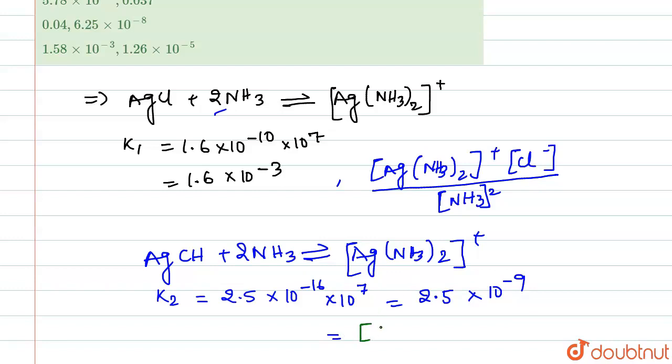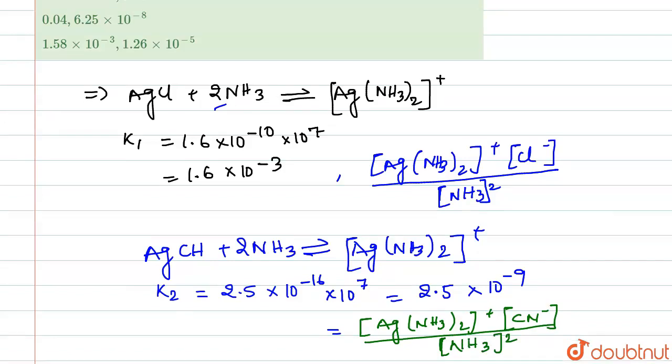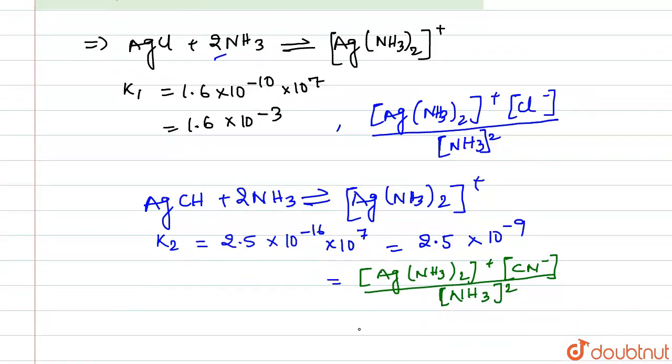For this, the concentration we are writing is, this will be equals to [Ag(NH3)2]+ and [CN-] divided by [NH3] square as stoichiometry is 2. Now we are having the ions. For this what we can do is we are just gonna calculate the ratio which is [Cl-] upon [CN-]. This is from equation one and this is two.